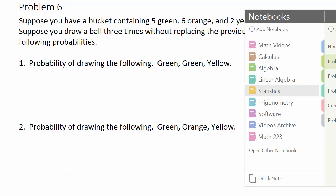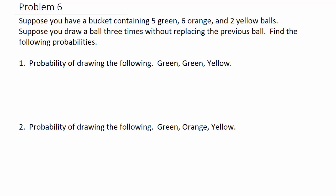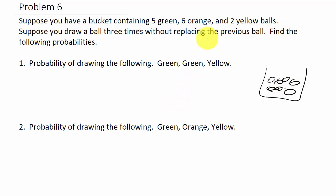Let's look at number six. Same bucket — five green, six orange, and two yellow balls — but now suppose you draw a ball three times without replacing the previous ball. So you reach in, take a ball out, set it on the table, then reach in again, take one out, set it on the table, and repeat a third time.